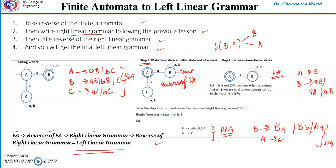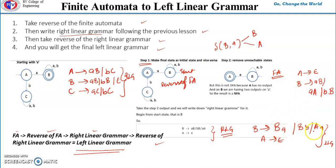To summarize: finite automata to right linear grammar is straightforward. For left linear grammar, first reverse the machine by making start final and final start, and reversing the direction of all edges. Then write the right linear grammar for the reversed machine, and finally reverse that right linear grammar to get the left linear grammar as the final answer. Hope you have understood the concept. Thank you for watching.